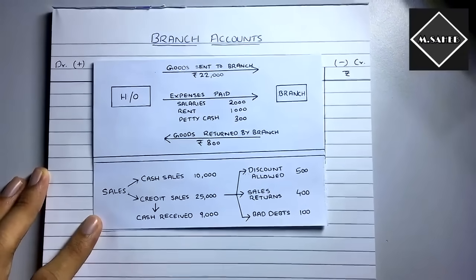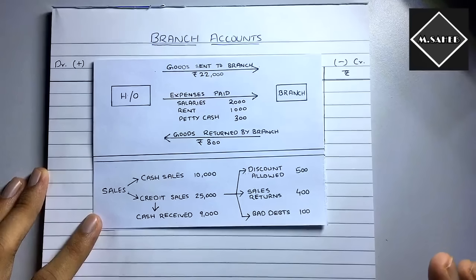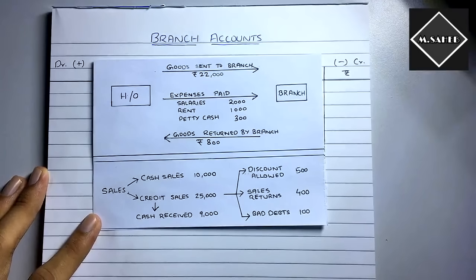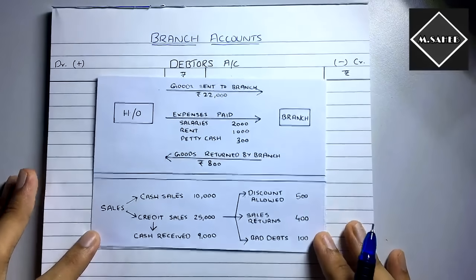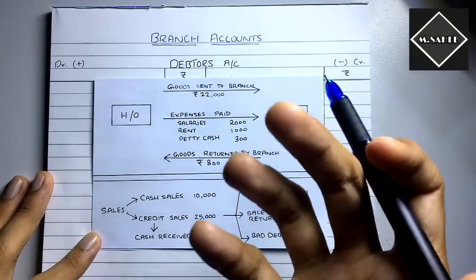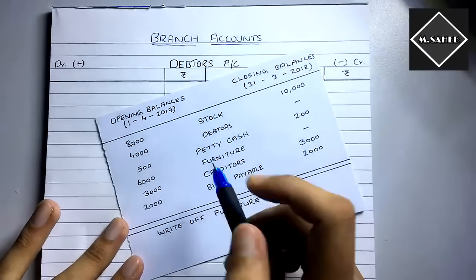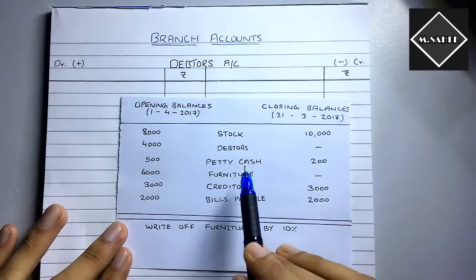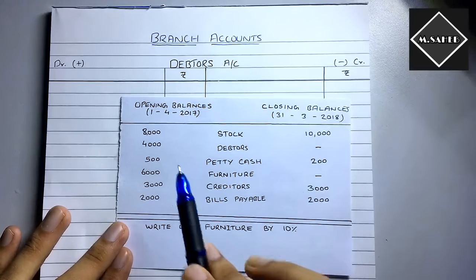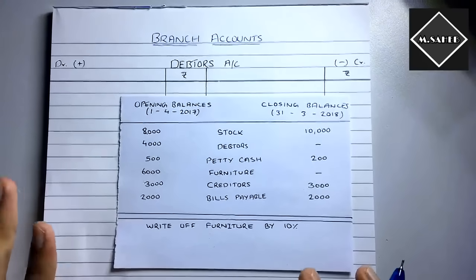We'll solve this through the debit system method. First, we need to prepare the debtors account. Three things are crucial: cash received from debtors, the opening balance of debtors, and the closing balance of debtors. Here the opening balance is given but the closing balance is not, so we must prepare the debtors account to find it.